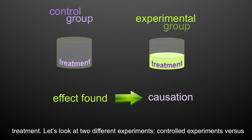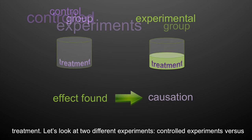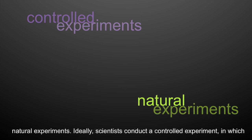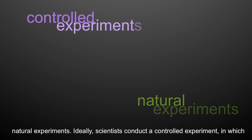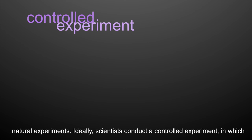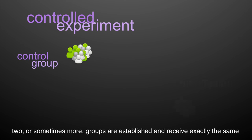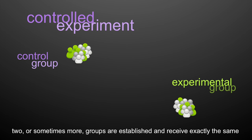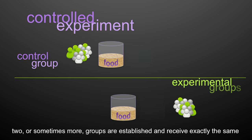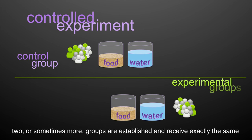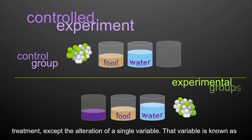Let's look at two different types of experiments: controlled experiments versus natural experiments. Ideally, scientists conduct a controlled experiment, in which two or sometimes more groups are established and receive exactly the same treatment except for the alteration of a single variable — that variable is known as the experimental variable.